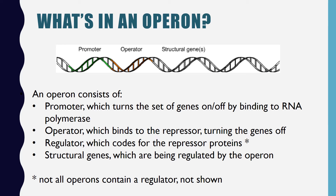The structural genes are transcribed when the operon is on — they are the end goal. Some operons have a regulator, which is a stretch of DNA that codes for the repressor protein. Most regulators are not under the control of the operon; in fact, regulators tend to be upstream or downstream of the promoter it affects. The regulator is regulated by another process.